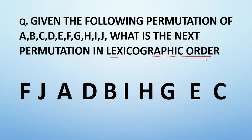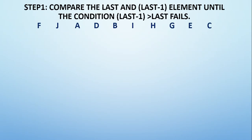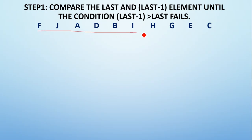Let us jump on to Step 1. In Step 1, we will be considering the last and last-1 element and checking the condition: is the last-1 element greater than the last element? When this condition fails, we will stop Step 1. Considering the pattern given in the question, here we have the last element as C and the last-1 element as E. Checking the condition: is E greater than C? The condition is true.